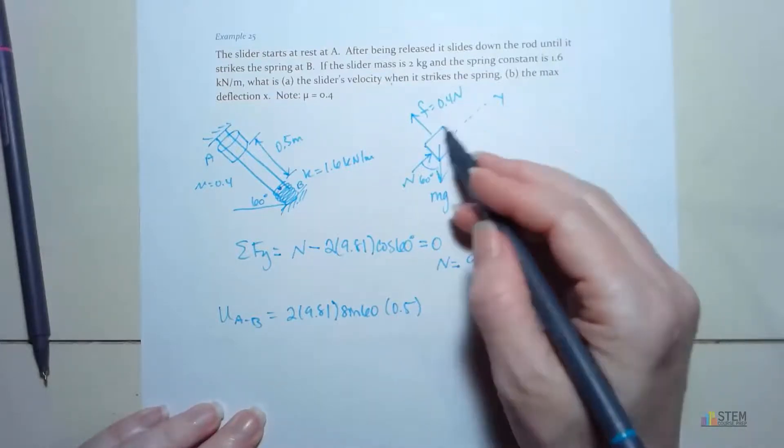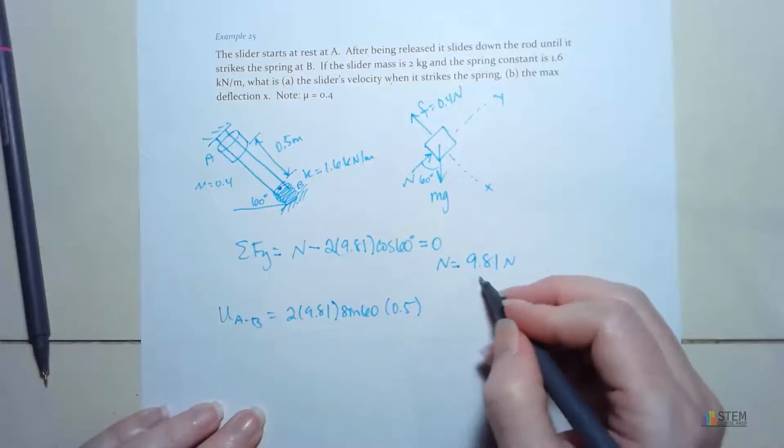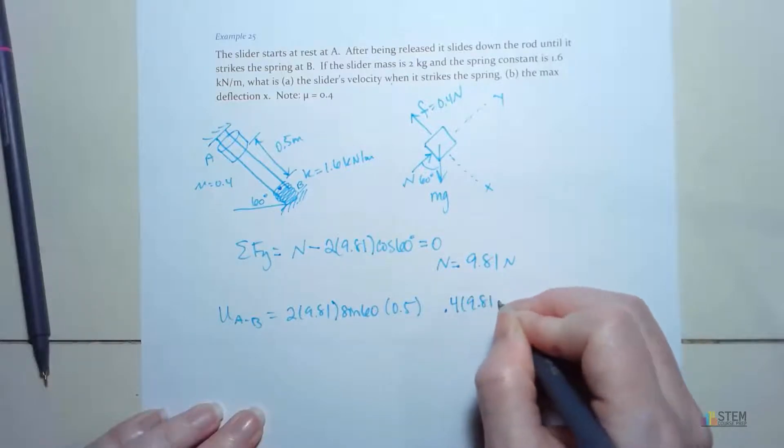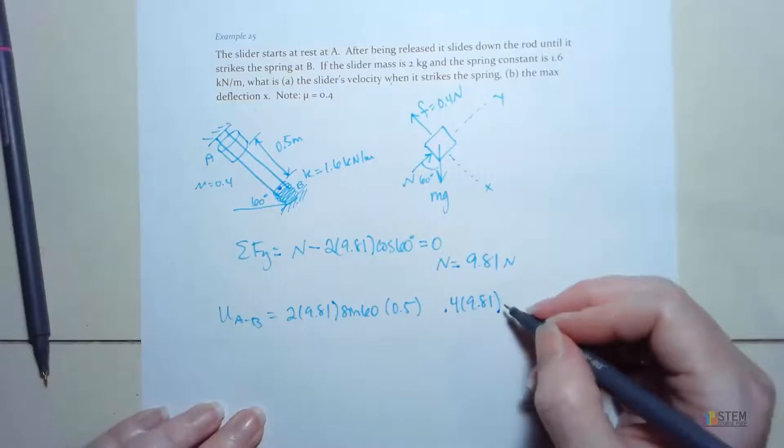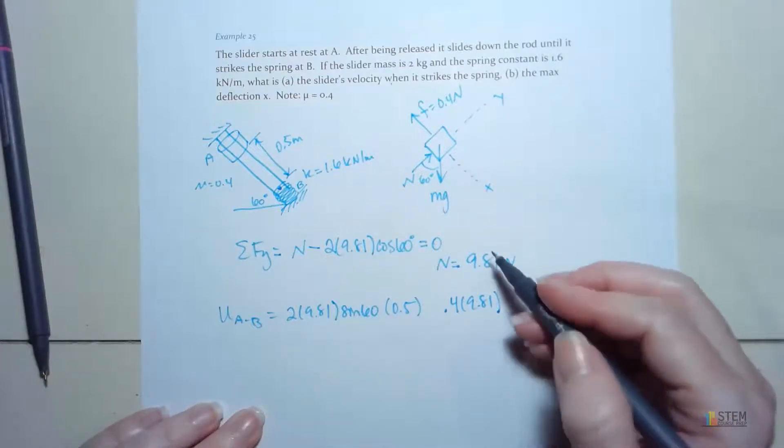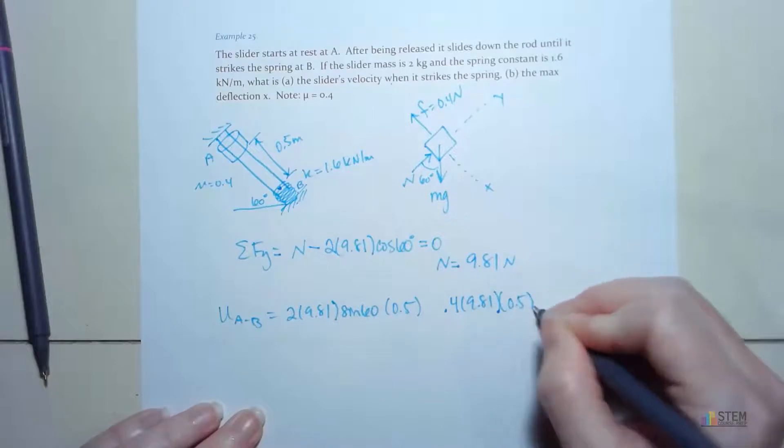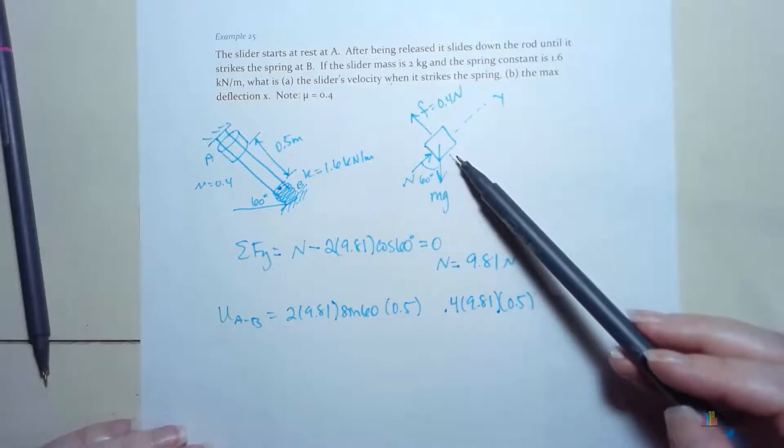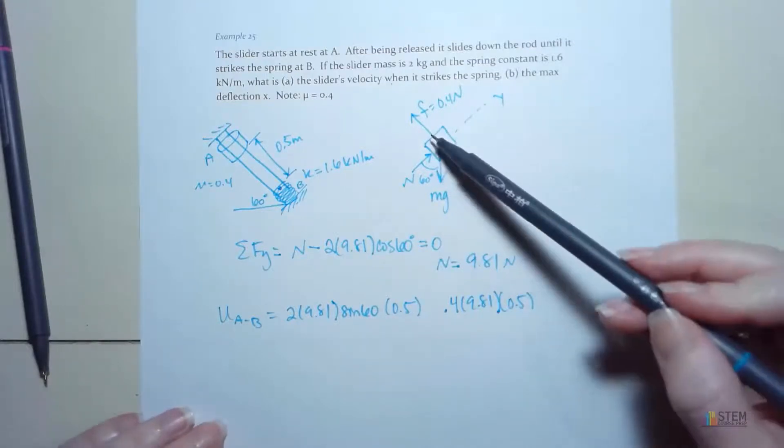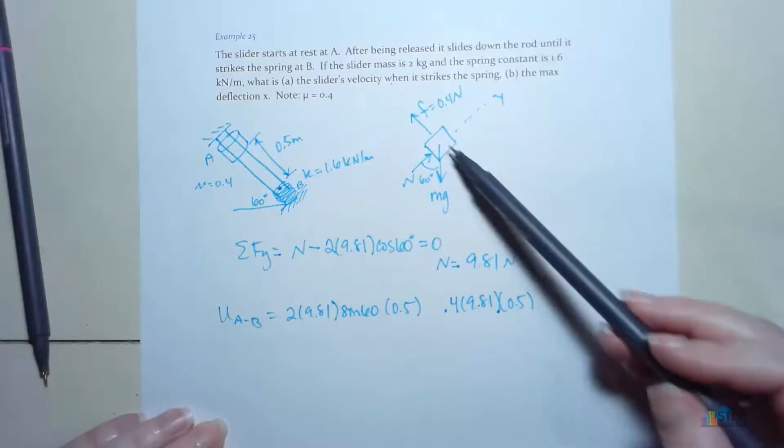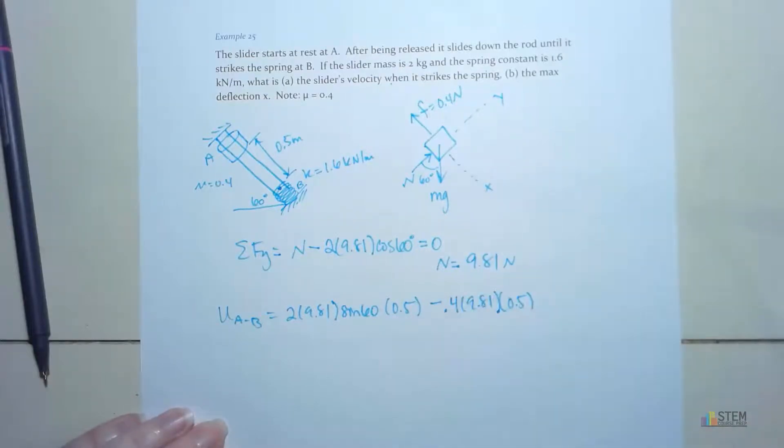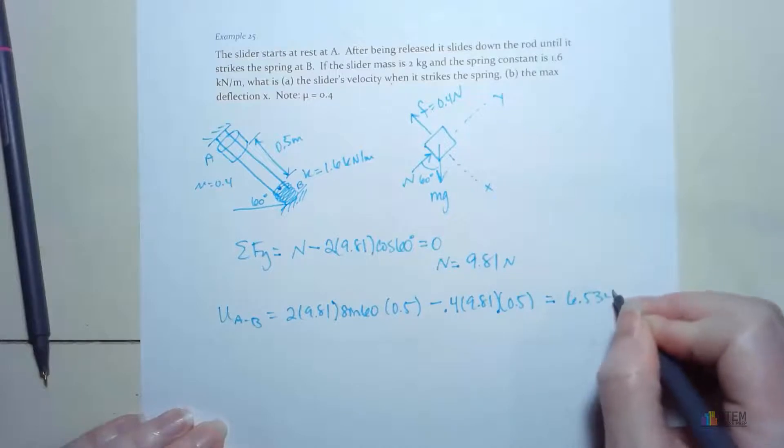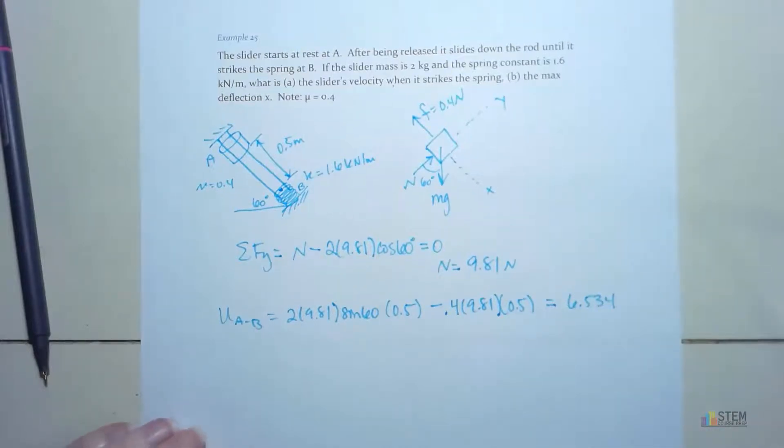This is positive because it's in my positive X axis. That's the direction we are traveling. Now, the other one for friction, our force is 0.4 times N. Well, N is 9.81, so I have 0.4 times 9.81. Now we need the distance we traveled in the X direction again. Well, we already know that's the 0.5. So you have that. Now, our sign convention is we're going to be negative if we're in the direction opposite of displacement. So I'm moving down the rod. Friction's going up, so this is opposite, so it's negative. Now that equals 6.534. So we've got that.